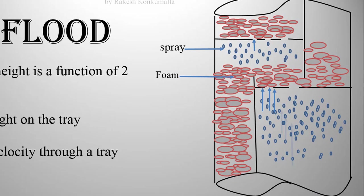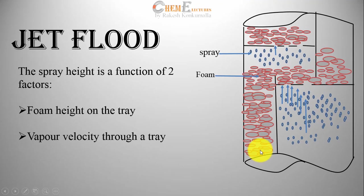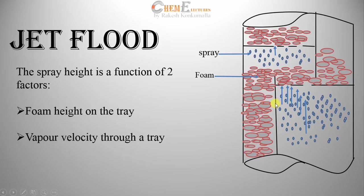When the vapor flow rate through a tray increases, the height of foam in the downcomer draining the tray will also increase. Because of high vapor velocity, more vapor is entrapped in the foam, requiring more residence time to separate, which in turn increases the height of foam in the downcomer. However, the height of foam on the tray will not be affected until the downcomer is filled with foam.